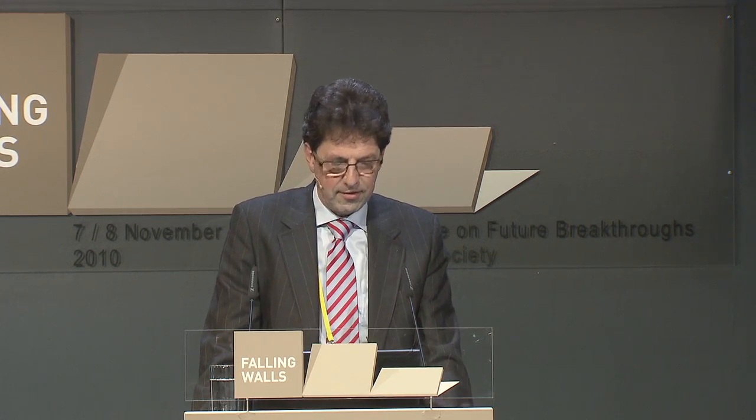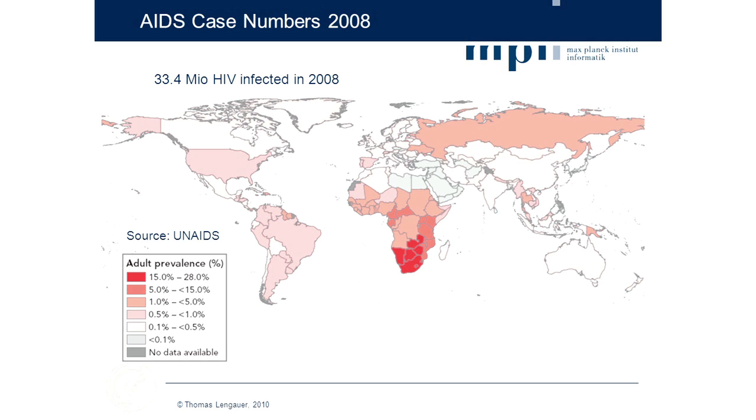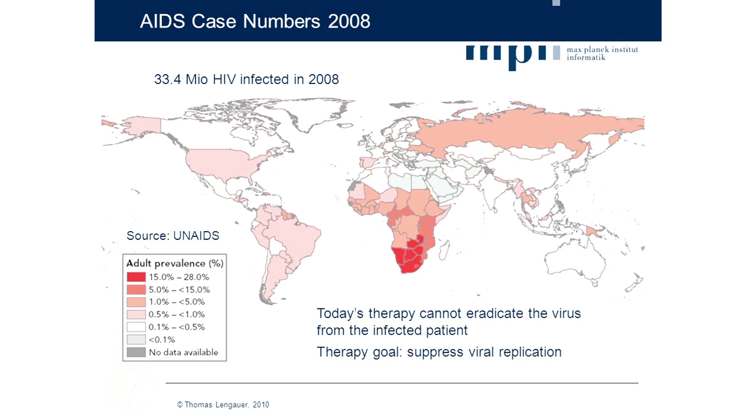I'm more concerned with trying to make the therapies against HIV that are available today as optimal as possible, and the next talk will explore new approaches to HIV therapy. AIDS, caused by HIV, is one of the big infectious killers of humans. The main problem we have to deal with today is that current therapy cannot eradicate the virus from the infected patient, which means once you have it, it's an alliance for life. The therapy goal can only be to suppress viral replication inside the patient's body, easing symptoms and prolonging life.